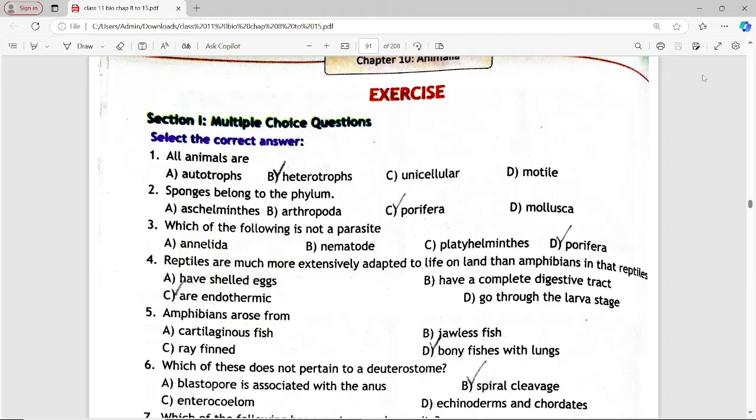So let's start. First MCQ is: all animals are. Options are autotroph, heterotroph, unicellular, motile. Answer is option B, heterotrophs.